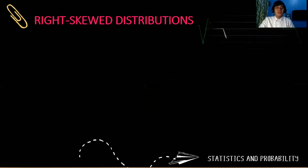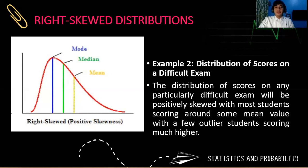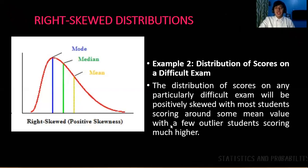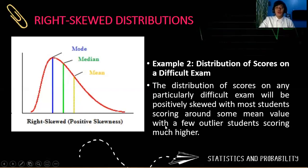Another example. The exam scores in any particular difficult exam will be positively skewed because students may get lower scores, and only fewer will get higher scores. That is only when the exam is difficult.